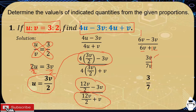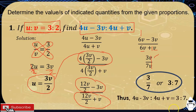So 3 over 7 can be written in colon form as 3 is to 7. Therefore, 4u minus 3v is to 4u plus v is equal to 3 is to 7. The answer is 3 is to 7, or 3 over 7.